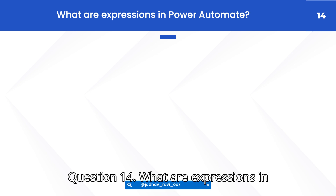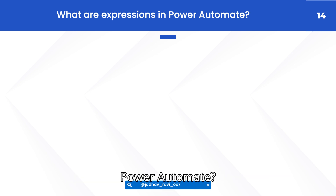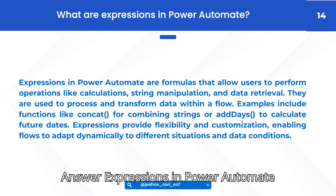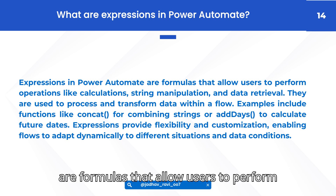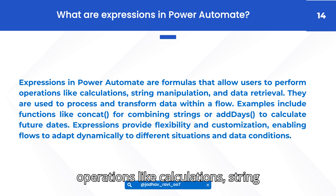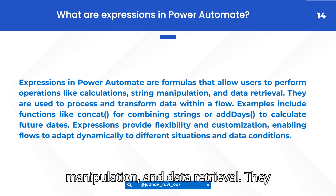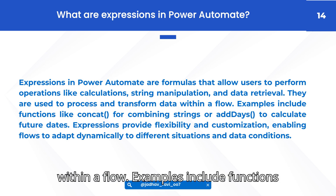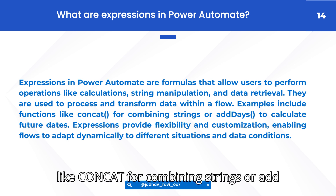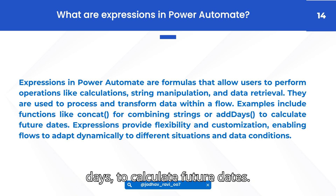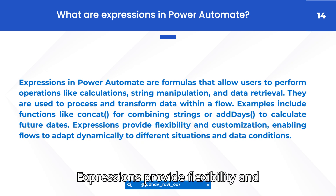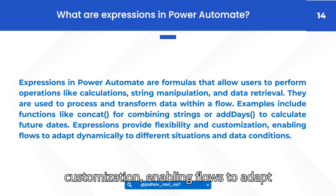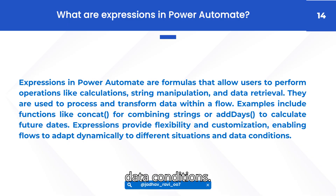Question 14: What are expressions in Power Automate? Answer: Expressions in Power Automate are formulas that allow users to perform operations like calculations, string manipulation, and data retrieval. They are used to process and transform data within a flow. Examples include functions like CONCAT for combining strings or add days to calculate future dates. Expressions provide flexibility and customization, enabling flows to adapt dynamically to different situations and data conditions.